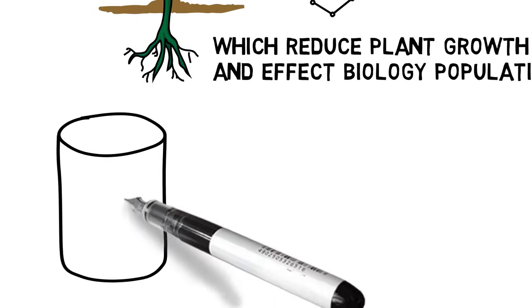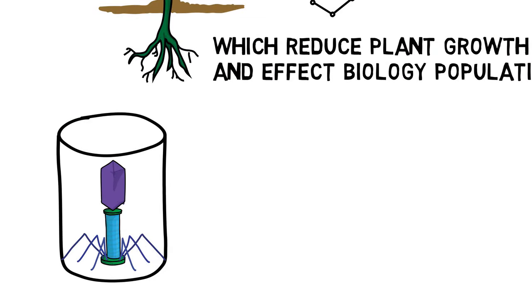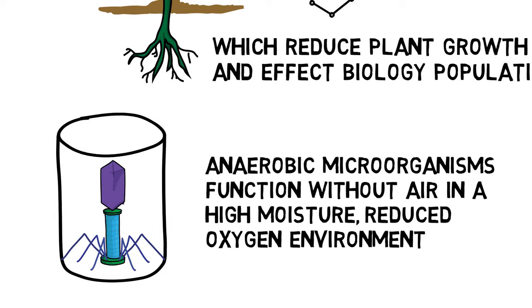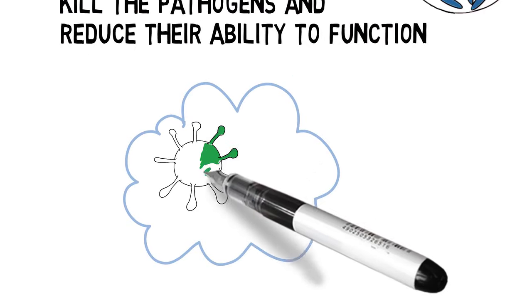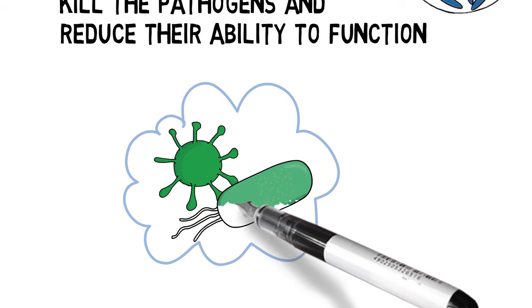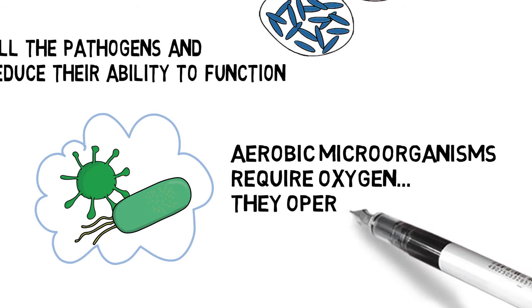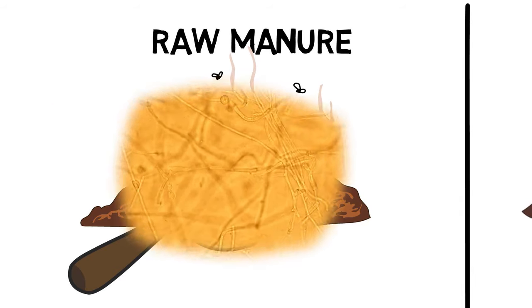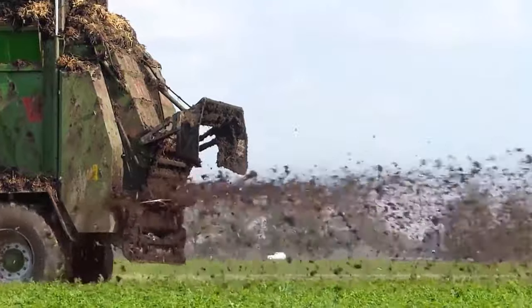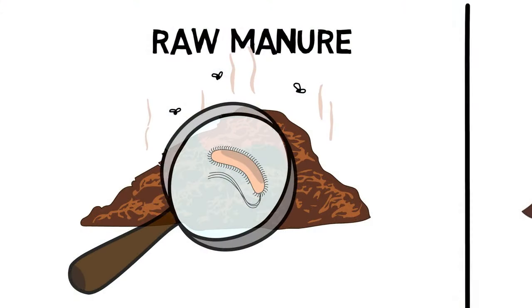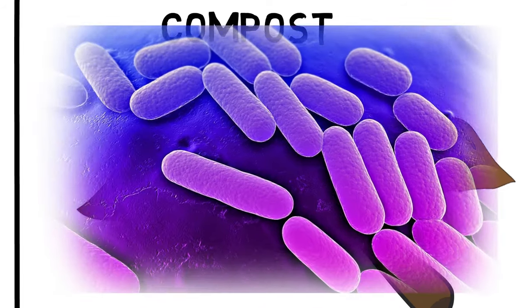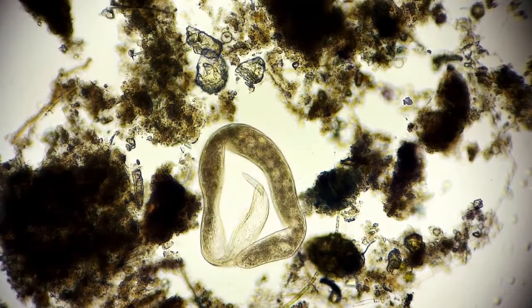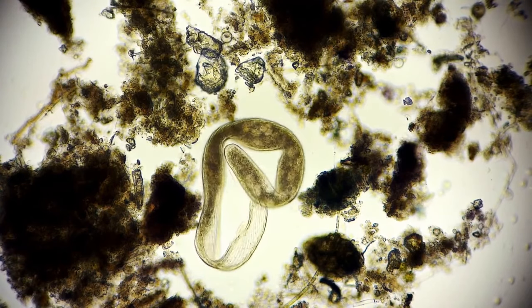Raw manure is highly anaerobic. Anaerobic microorganisms are those that function without air in a high moisture, reduced oxygen environment. Composted manure is completely aerobic — aerobic microorganisms require oxygen, like us, and operate in a very aerobic environment. So we have a complete switch of the biology. Raw manure produces anaerobic pathogens that are then moved into our soil, whereas composted manure produces all of the aerobic beneficials: bacteria, fungi, protozoa, and nematodes — which are not at all like the biology populations in raw manure.